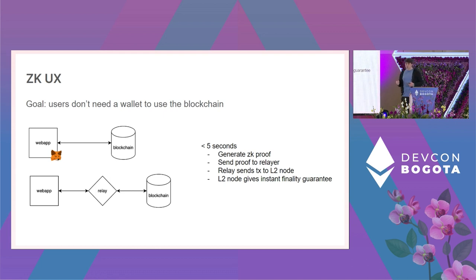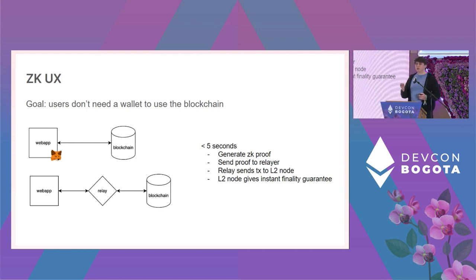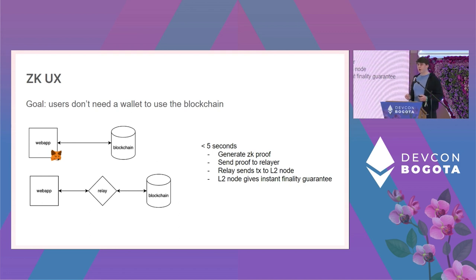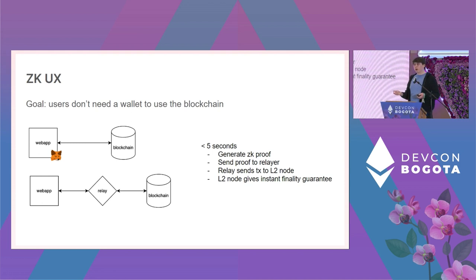From a user experience perspective, the goal is: a user clicks a button, in less than five seconds we show a loading animation while generating a ZK proof, give it to the relayer, the relayer packages it into a transaction and gives it to an L2 node that returns an instant finality guarantee. We stop the loading animation and say the action is complete. If the sequencer doesn't include the transaction, we show a notification — but hopefully that code path is rarely triggered.